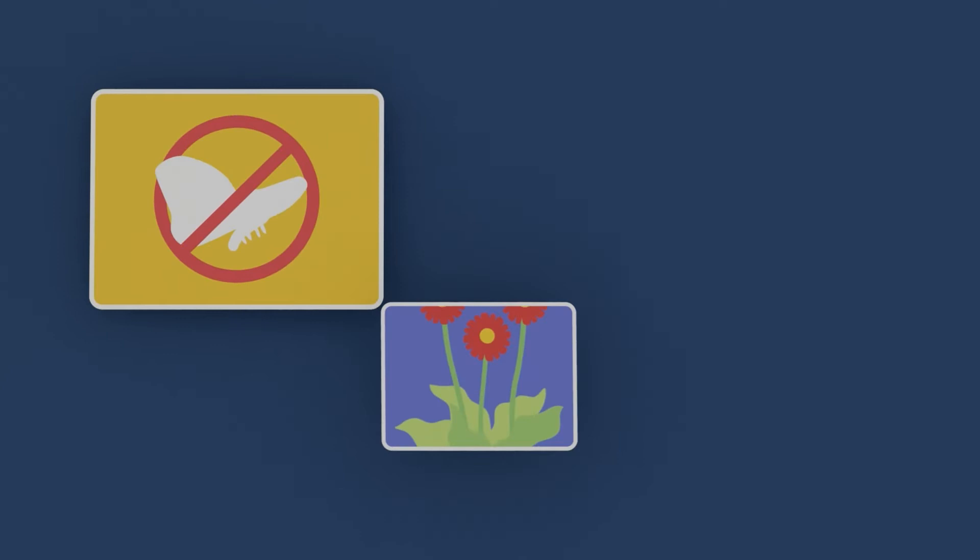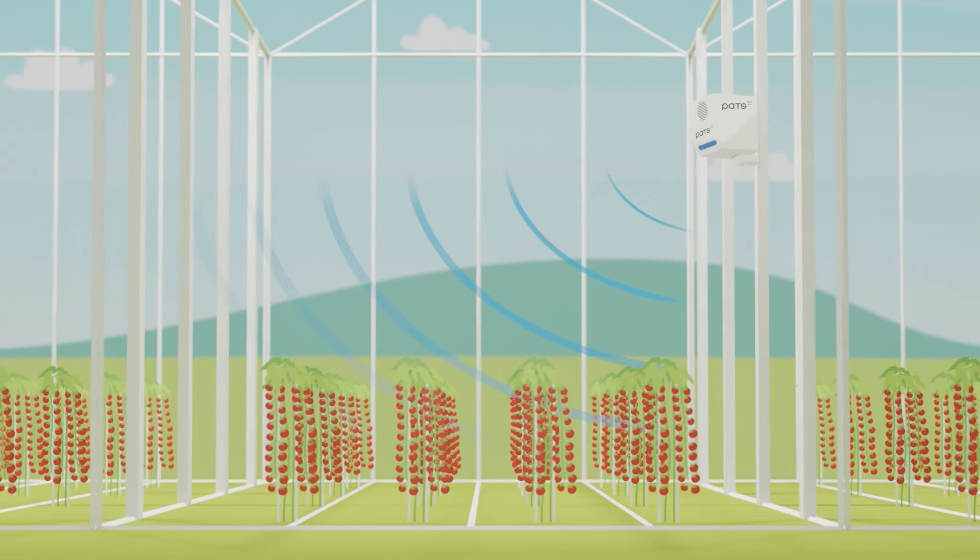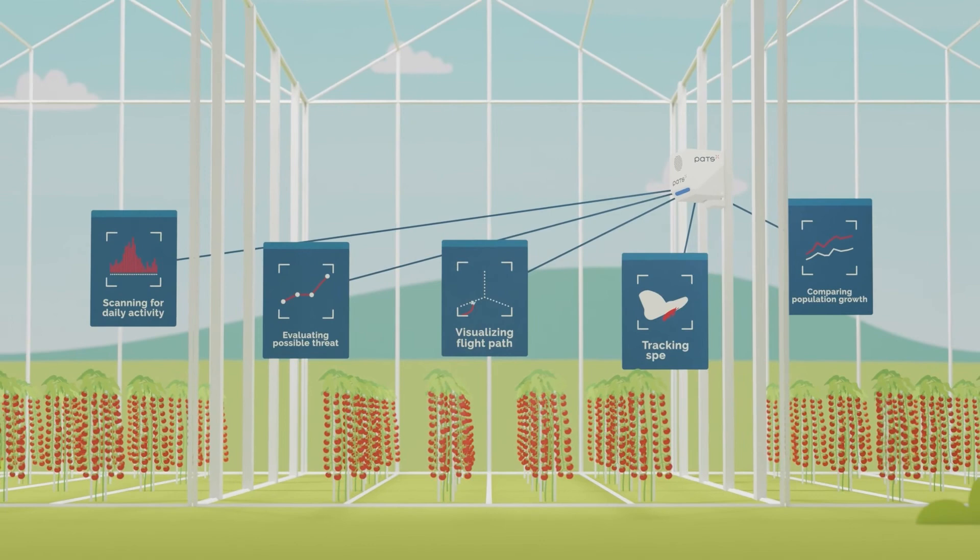Our system detects pests up to five weeks earlier compared to existing scouting solutions. With PAT-C, you are on top of any threat that may hide in your crops or just entered your greenhouse.